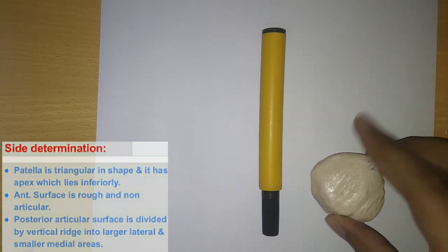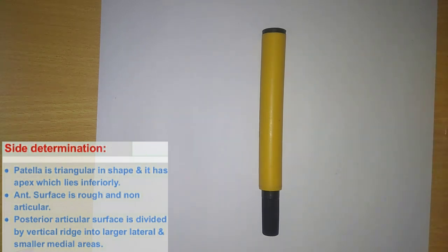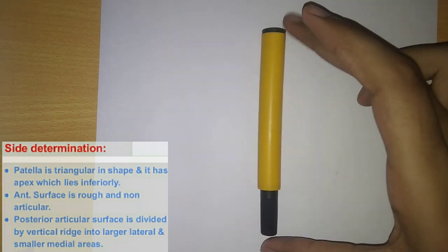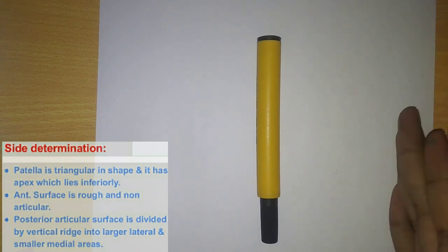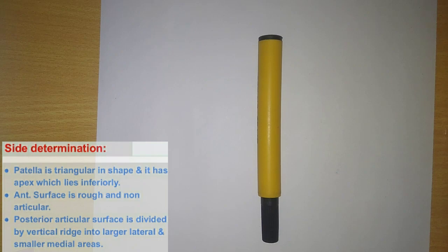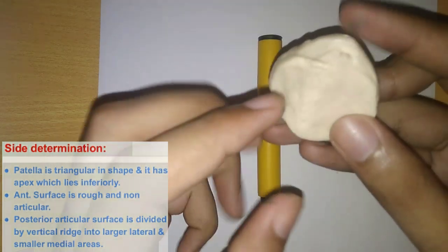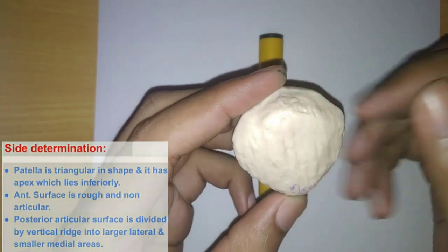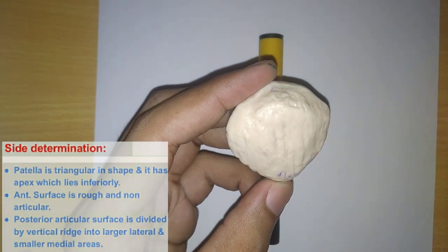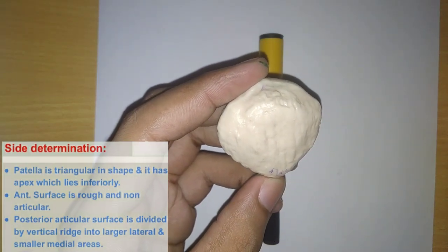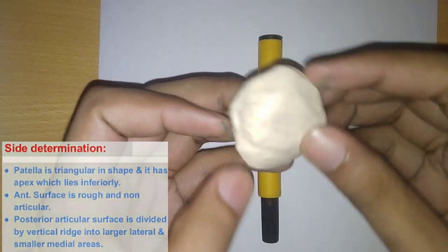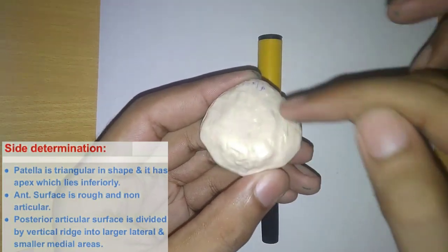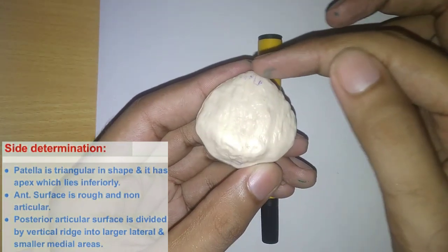The next part we need to discuss is side determination. For better understanding, assume this pen as a center line — this area is the right side and this area is the left side. The first point: the patella is triangular in shape and its apex lies in the inferior direction.